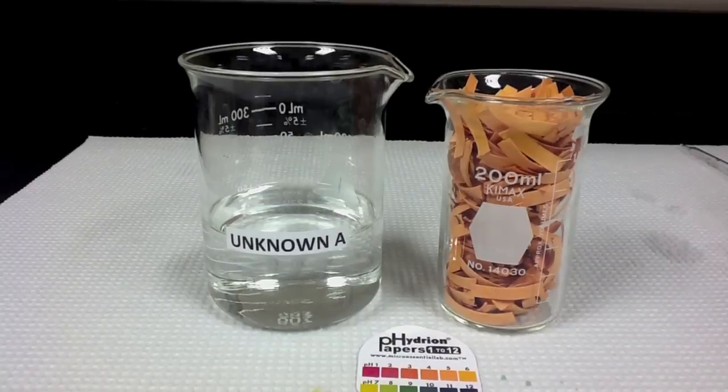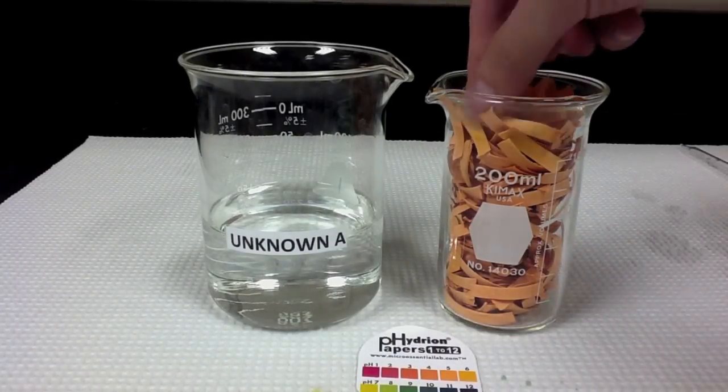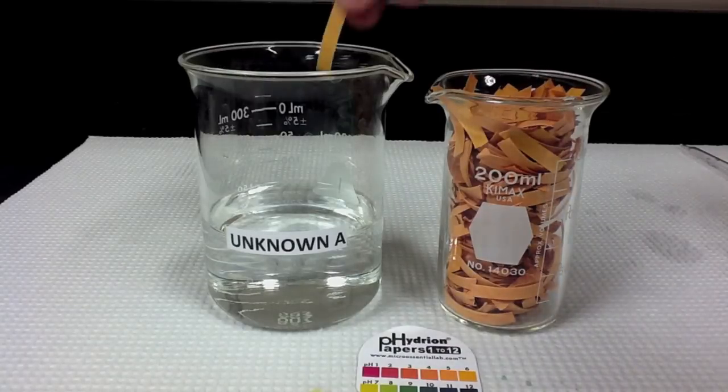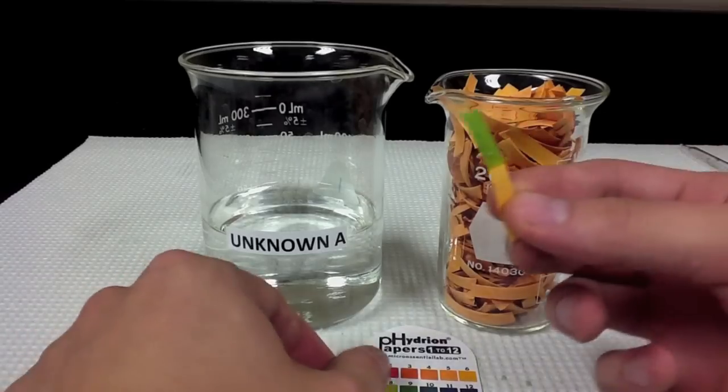pH paper works in a similar fashion to anthocyanins in that it uses a colorimetric scale to determine pH. Simply take a piece of the paper, dip it into the solution, and then compare the colorimetric result to the chart provided in your lab manual.